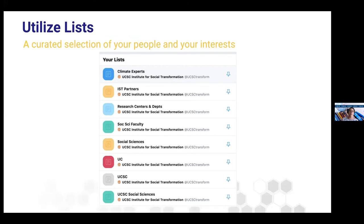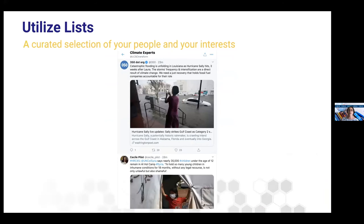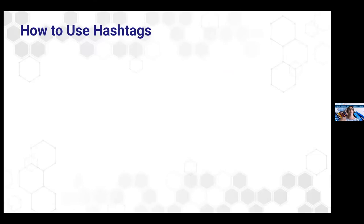Utilize lists. There is a feature on Twitter called Twitter Lists that will curate people and interests. You can start a new list called, for example, 'climate experts,' and within that list you put different handles of climate experts or different hashtags. Once you click onto that list, the only thing in that feed will be the people you've designated as climate experts and their hashtags — an entire feed dedicated just to that topic. Lists are super important to stay right in the niche of what's going on so you don't have to dig through the huge newsfeed.